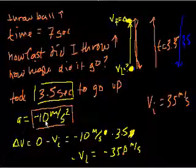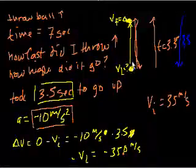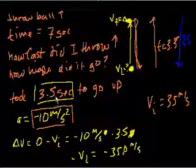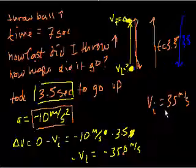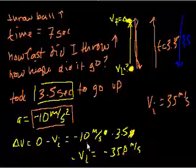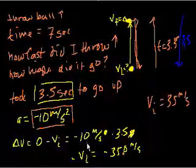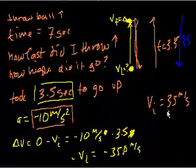And it's decelerating at this speed, right? So every second, it's getting 10 meters per second slower. Every second I go, it's getting 10 meters per second slower. So if it took 3 and 1 half seconds to go to 0, I must have started off at 35 meters per second.